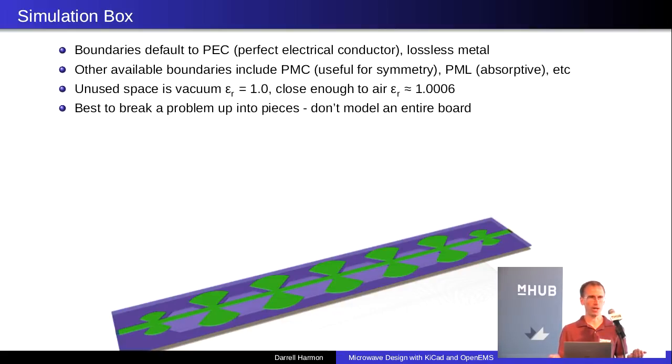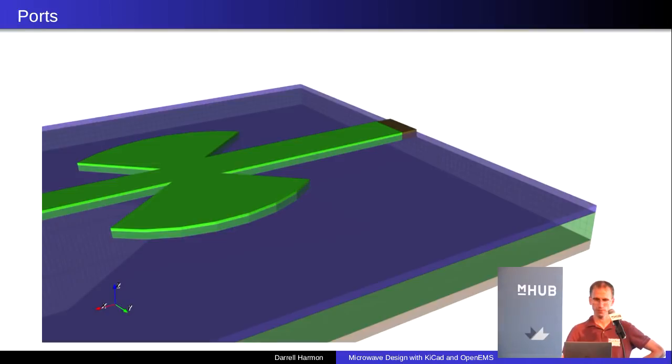In OpenEMS, we have a simulation box. By default, all the boundaries are perfect electrical conductor, which is essentially lossless metal. There are many other boundaries available. PMC, which is useful for symmetry, which is perfect magnetic conductor, doesn't exist in nature really. And perfect magnetic, or perfectly matched layer, which is an absorptive boundary, like if you wanted to simulate it being open to the air. Worth looking at the OpenEMS documentation on that. There are many boundaries, many things to read about there. The unused space in our model is vacuum, which is close enough to air for our purposes. We have some air space above and below our filter. It's best to break a problem up into pieces. Simulating an entire board probably would take too long.